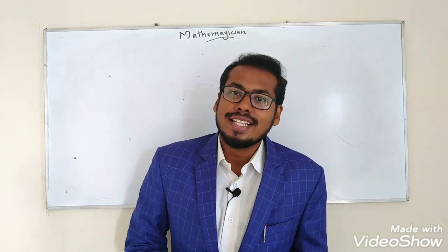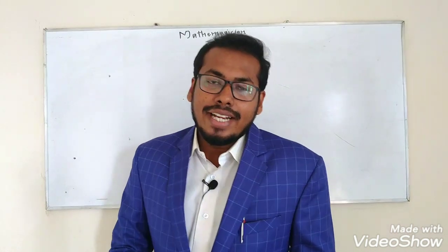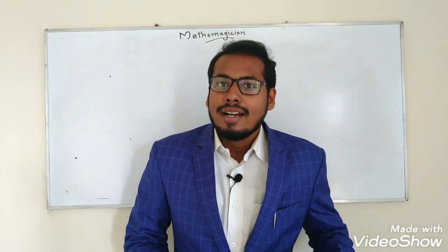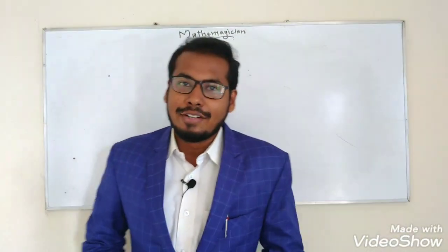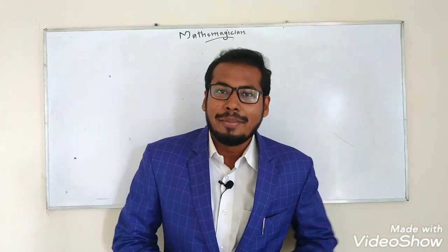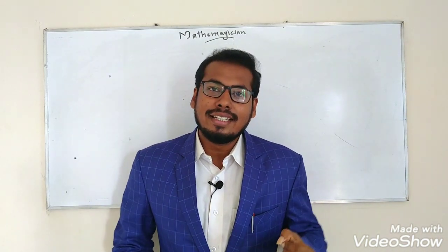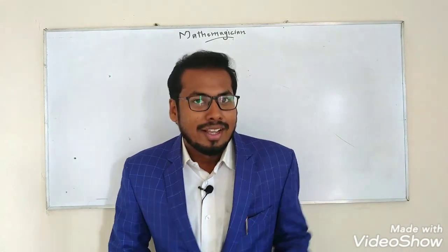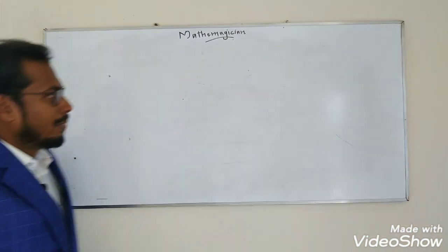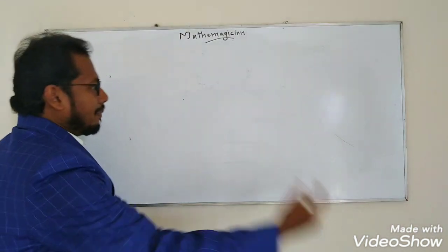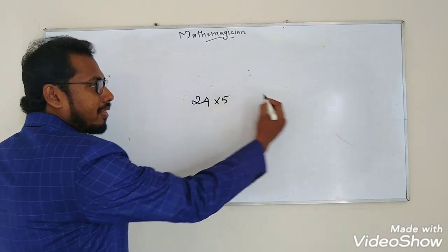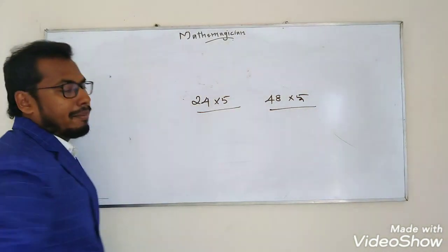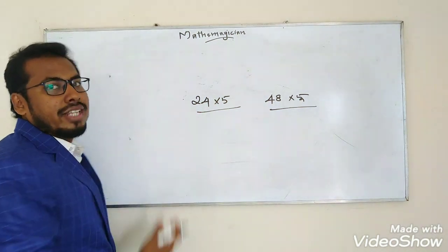The first multiplication trick we are going to see is the 5 tables. If you have to multiply any number by 5, just take half of the number.